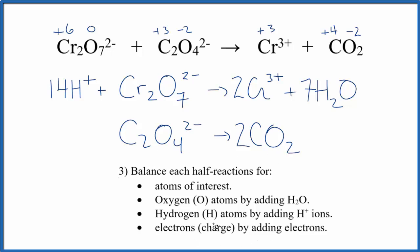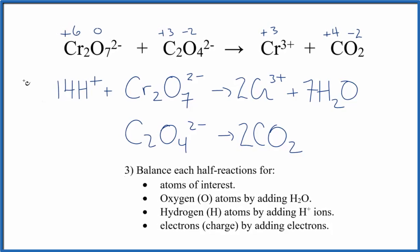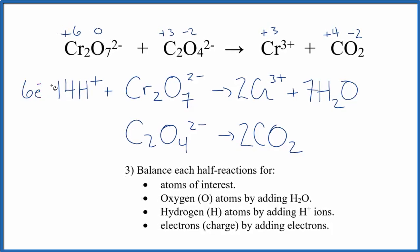Finally, we're going to balance the charge by adding electrons. So up here it's a little bit challenging. We have 14+ and 2-, so that gives us 12+ over here. Here we have two times 3+ is 6+. So I'm going from 12+ to 6+. I need to add six electrons over here. So now if you add all of these charges up, they'll be the same on both sides. Down here I have the 2-, so let's add two electrons to balance the charge. So we've balanced the half reactions.